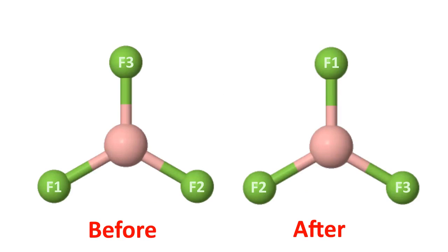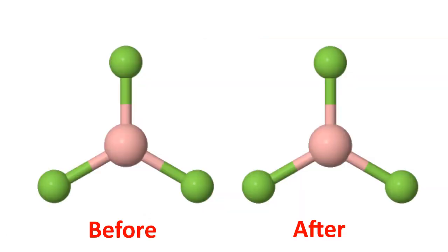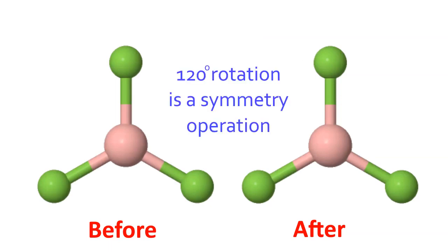Now, if we could label fluorine atoms like this, we could observe clearly that the molecule had been moved. But since all fluorine atoms are indistinguishable, we cannot label these molecules and the new configuration after rotation is entirely equivalent to the original configuration. We all see that the molecule had moved, but we cannot distinguish the configuration before and after the operation. Such a movement is a symmetry operation.